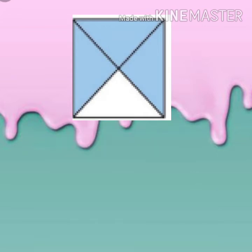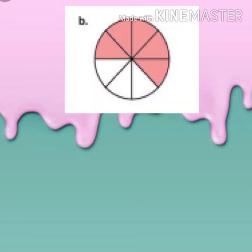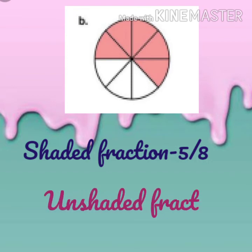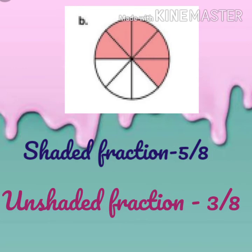Next, we are having one more example. We are having a circle with eight equal parts. So how many parts are shaded here? One, two, three, four, five — so five parts are shaded. So in this circle, the shaded fraction will be five upon eight. And the unshaded fraction — yes, three parts are unshaded — so the unshaded fraction will be three upon eight.